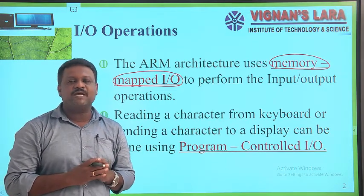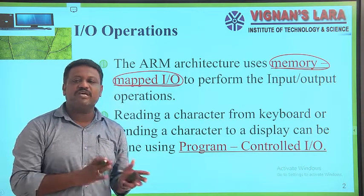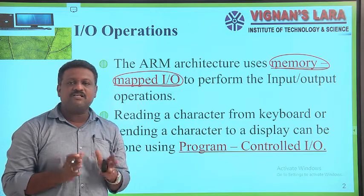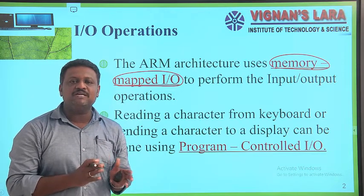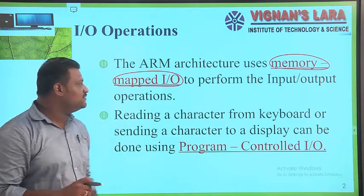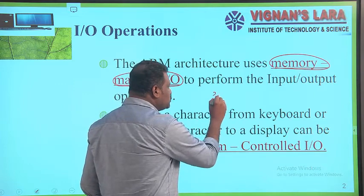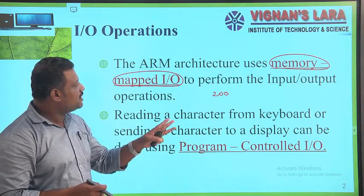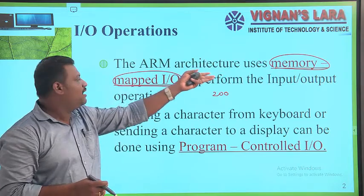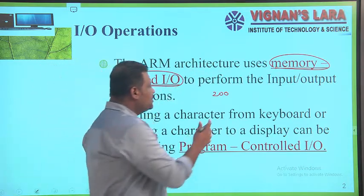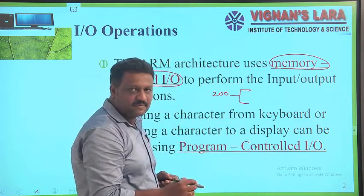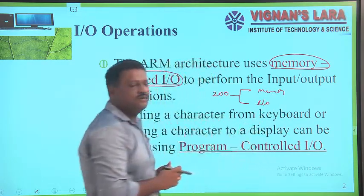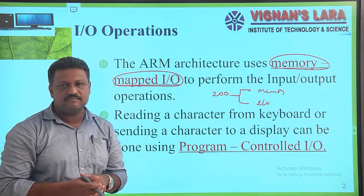The meaning of memory-mapped I/O is that the available address space can be shared by both memory as well as I/O devices. For example, if there are a total of 200 addresses available in the address space, some addresses are used by the memory and remaining addresses are used by I/O devices. That means the 200 addresses are split into two halves — one half used by memory and the second half used by I/O devices.